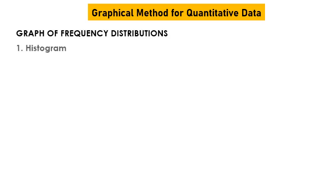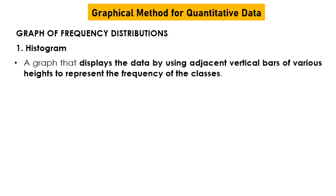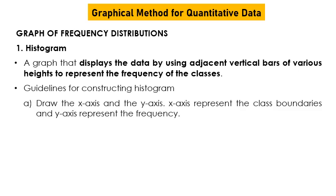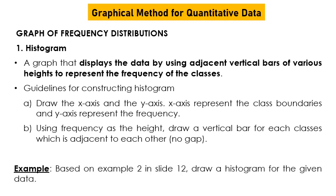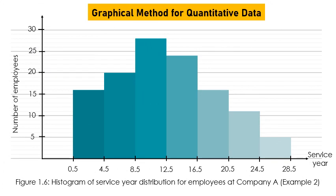Next, graphical frequency distribution — the histogram. Guideline to draw a histogram: based on Example 2 in slide 12, draw a histogram for the given data. The class boundaries are 0.5, 4.5, 8.5, and the frequencies are 16, 20, plotted accordingly.